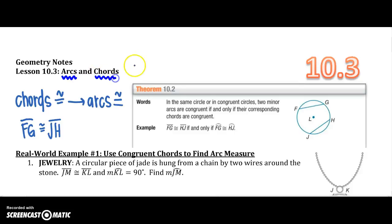So remember, chords have endpoints at the sides of the circle. Theorem 10.1 says in the same circle or congruent circles, two minor arcs are congruent if and only if their corresponding chords are congruent.